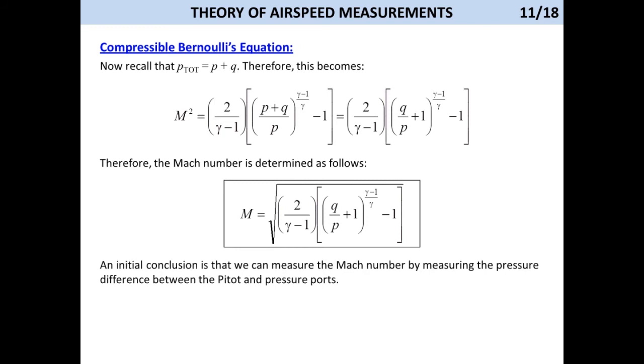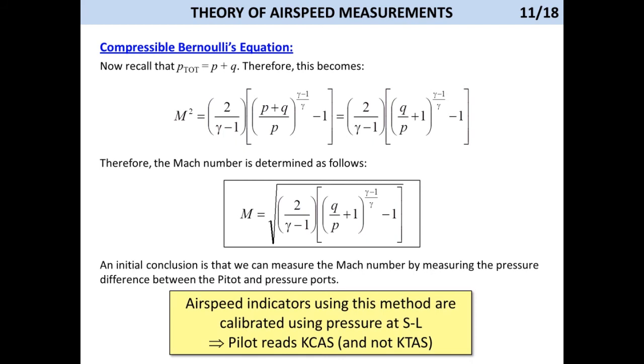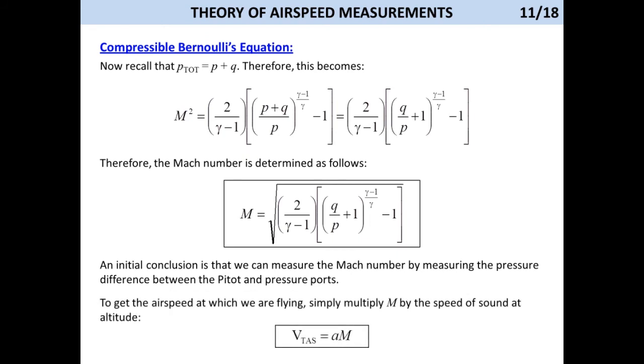Therefore, an initial conclusion is that we can measure the Mach number by measuring the pressure difference between the pitot and static pressure ports. To get the airspeed at which we are flying, simply multiply this Mach number by the speed of sound at altitude.